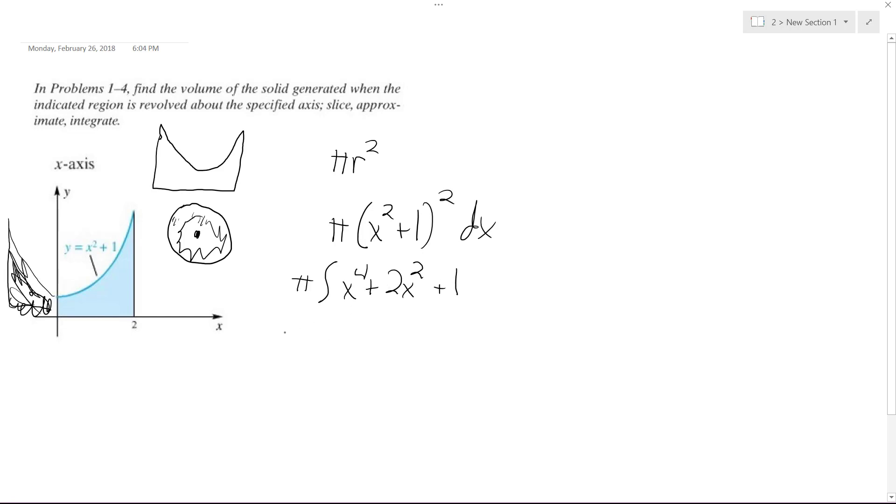So what we end up with after we integrate this is, and we're integrating this from 0 to 2, we get x to the fifth over 5 plus 2x to the third over 3 plus x, and we're going from 0 to 2.